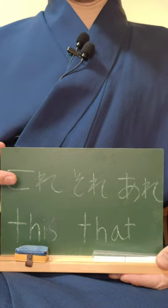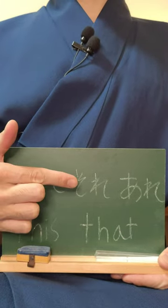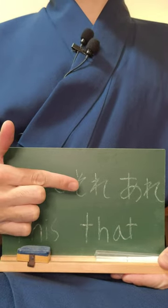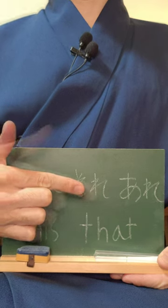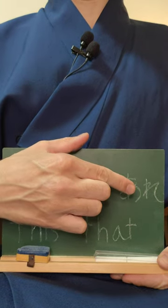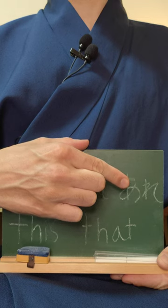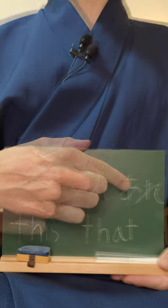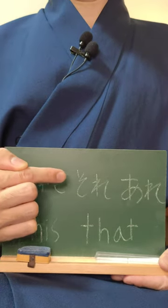Kore is used for things that are close to you. Sore is used for things that are close to the person you are talking to. Are is used for things that are far away from both you and the person you are talking to. So that is how you know the difference.